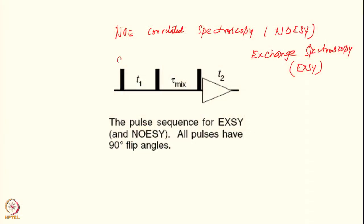How does this work? The pulse sequence has three 90-degree pulses — a first 90, another 90, and a third 90 — just like in COSY we had two 90-degree pulses, and double quantum filtered COSY also had three pulses. But now we have a particular time period called the mixing period.